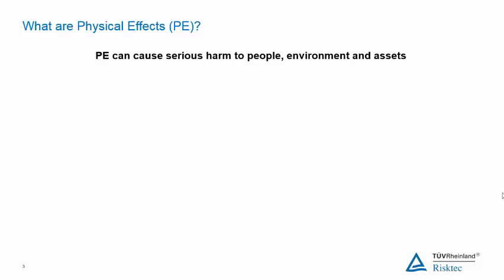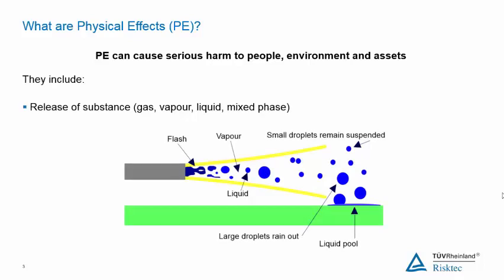We will look at the various types of physical effects we might choose to model. The physical effects include release of a substance in any form: gas, liquid, or mixed phase.